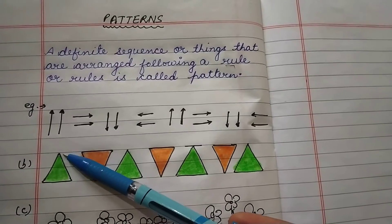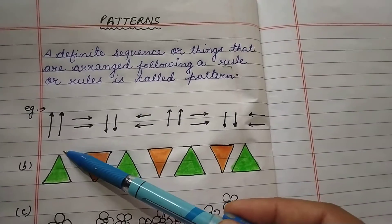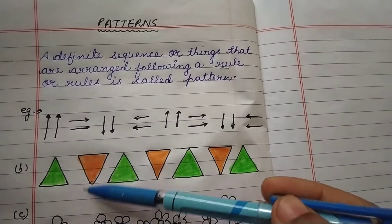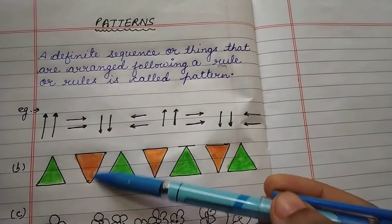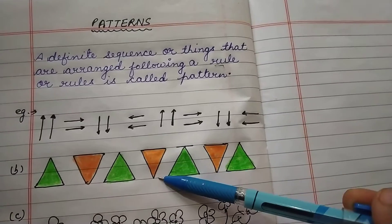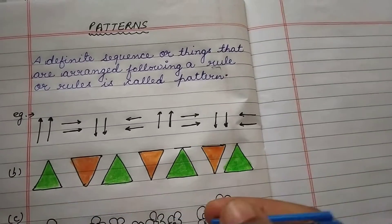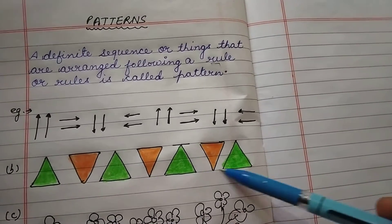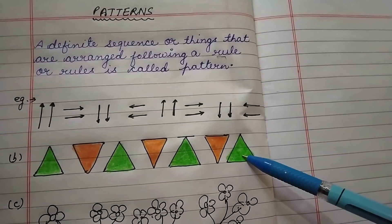First triangle, the one vertex is upward and in second figure, the corner of this triangle is downward, then upward, then downward, then upward. So, these figures are again following a specific sequence.